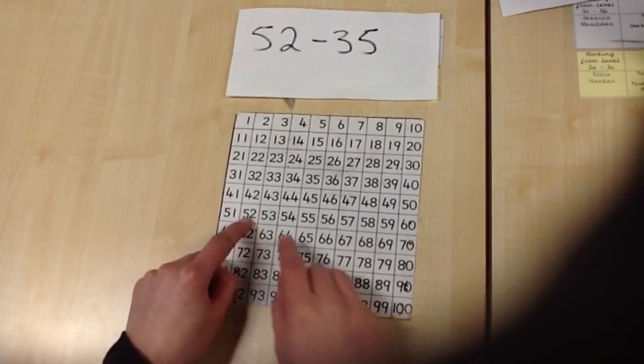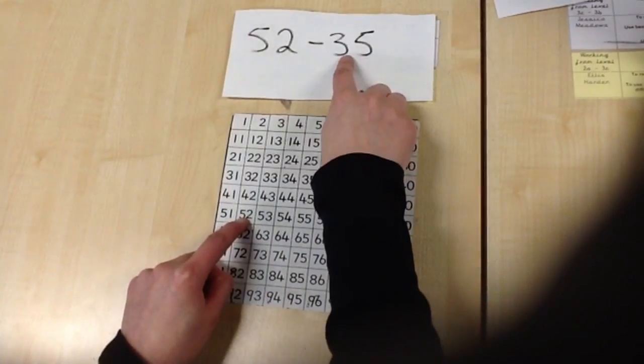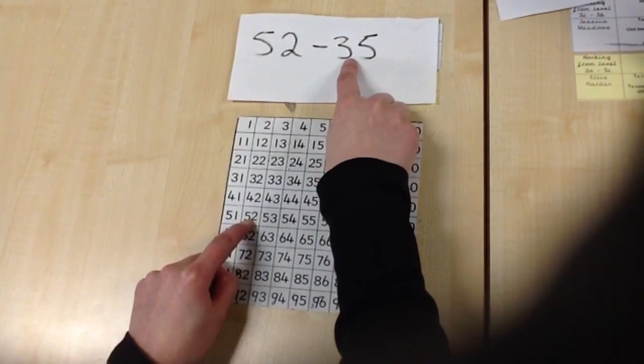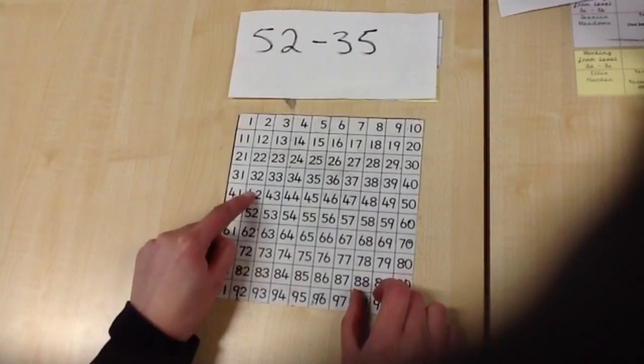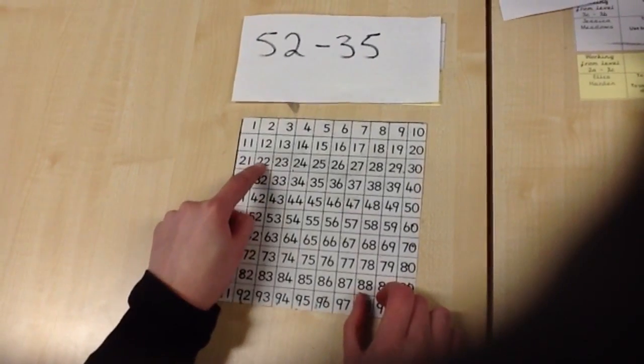And I look to see how many 10s there are. So there are 3 tens. There's 30. So I count back 10, 20, 30.